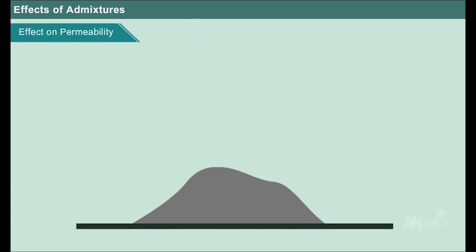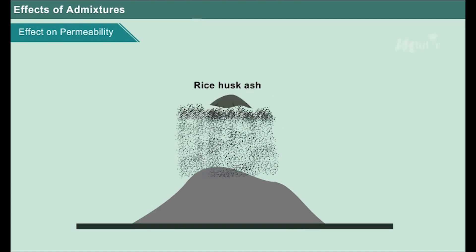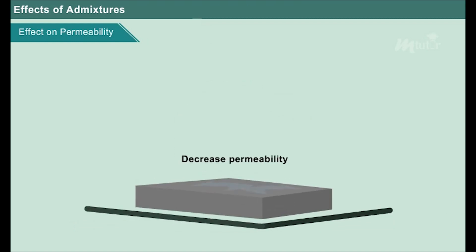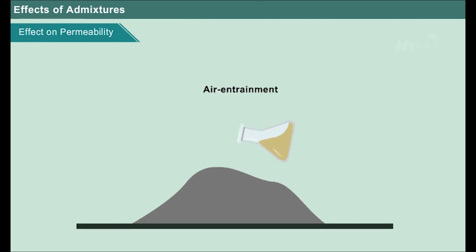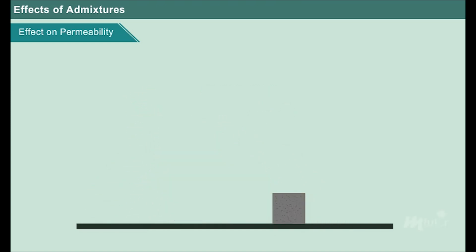Effect on permeability: Metakaolin and rice husk ash are used to decrease the permeability of concrete. Air entrainment in concrete has a significant effect on the permeability of concrete. Greater uniformity of concrete with entrained air is due to its increased workability and modified pore structure.